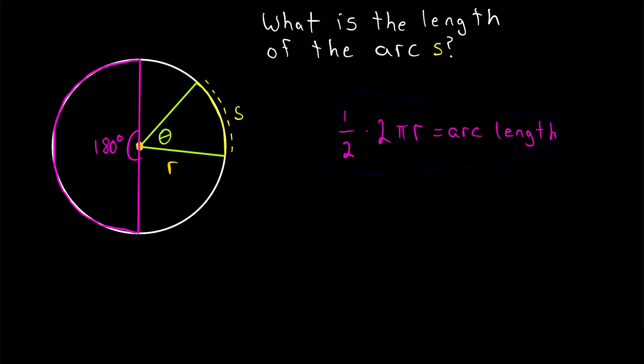Notice what we're actually doing in this expression. All we're doing is multiplying the portion of the circle that's cut by the angle, in this case one half because it's a 180 degree angle, and then we multiply that by the circumference of the circle.